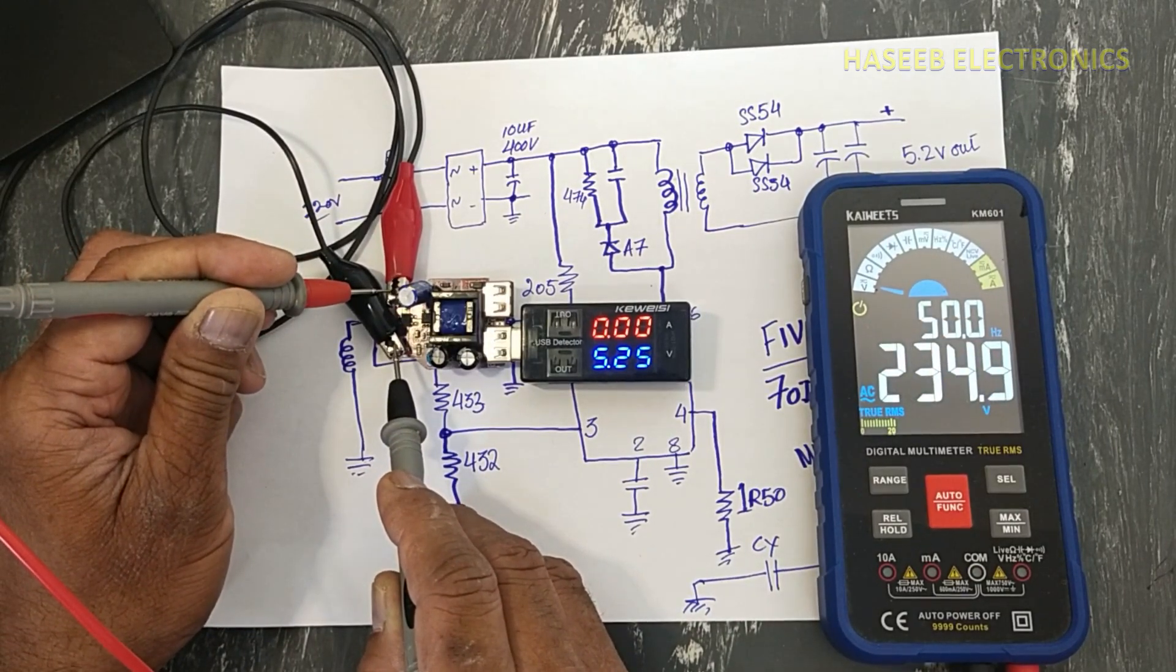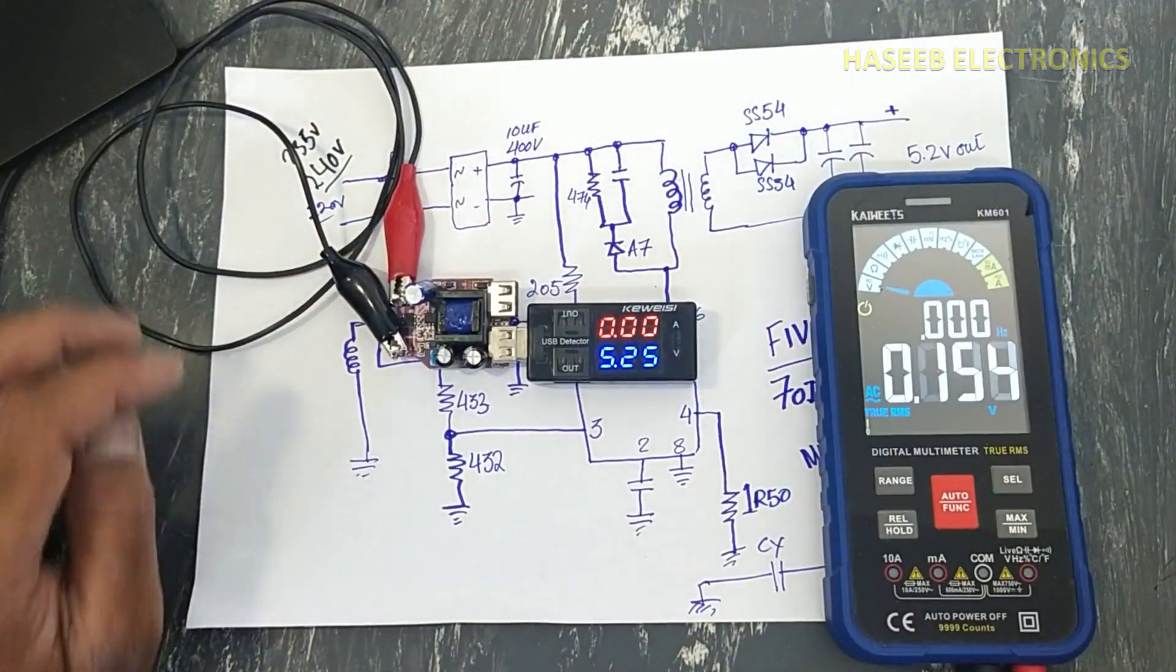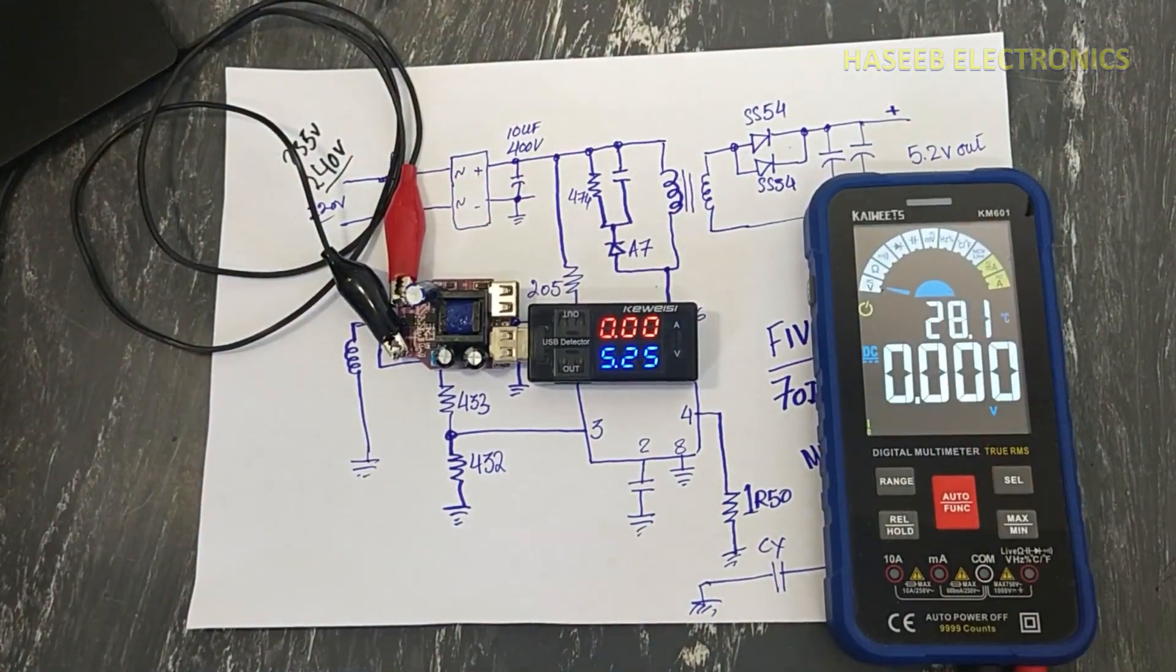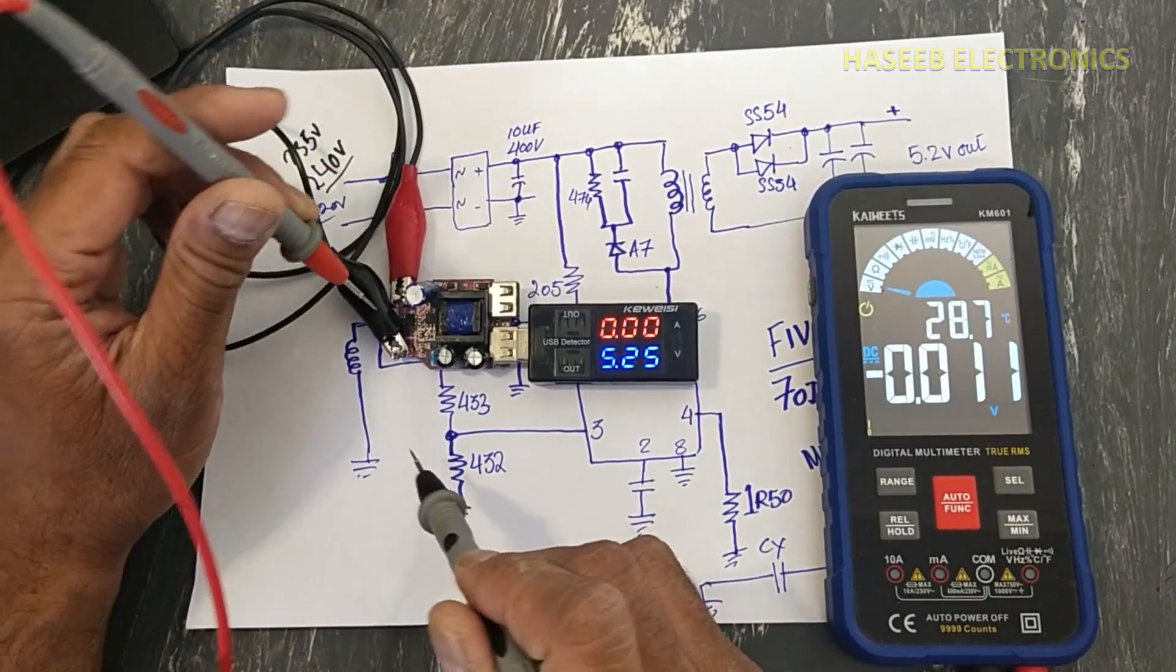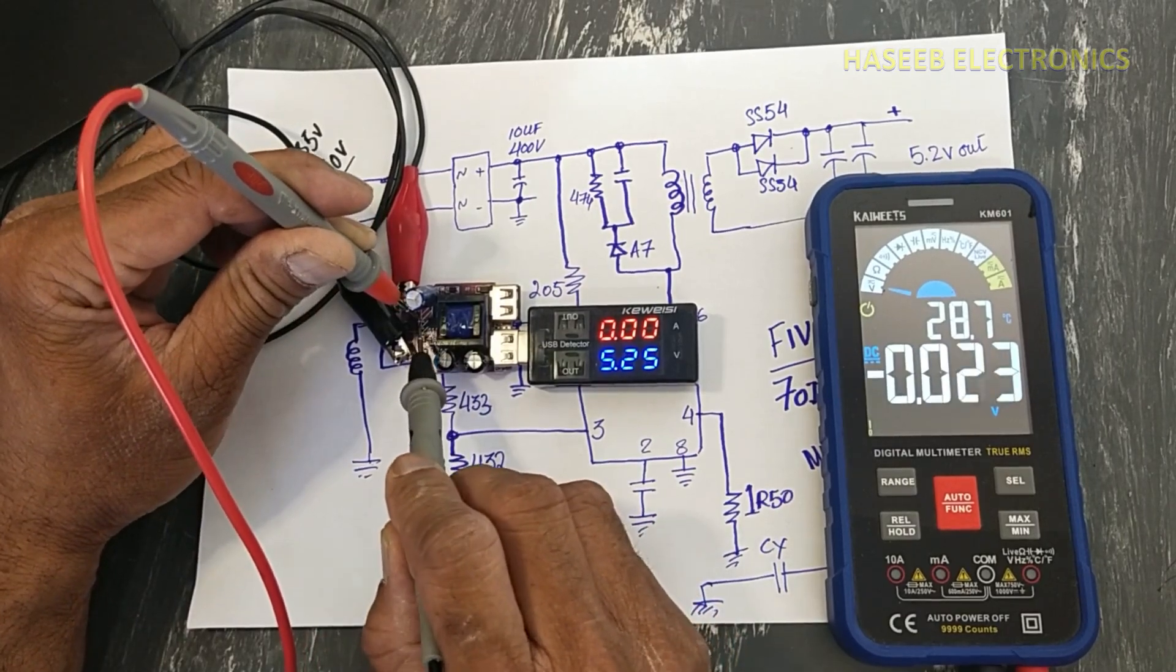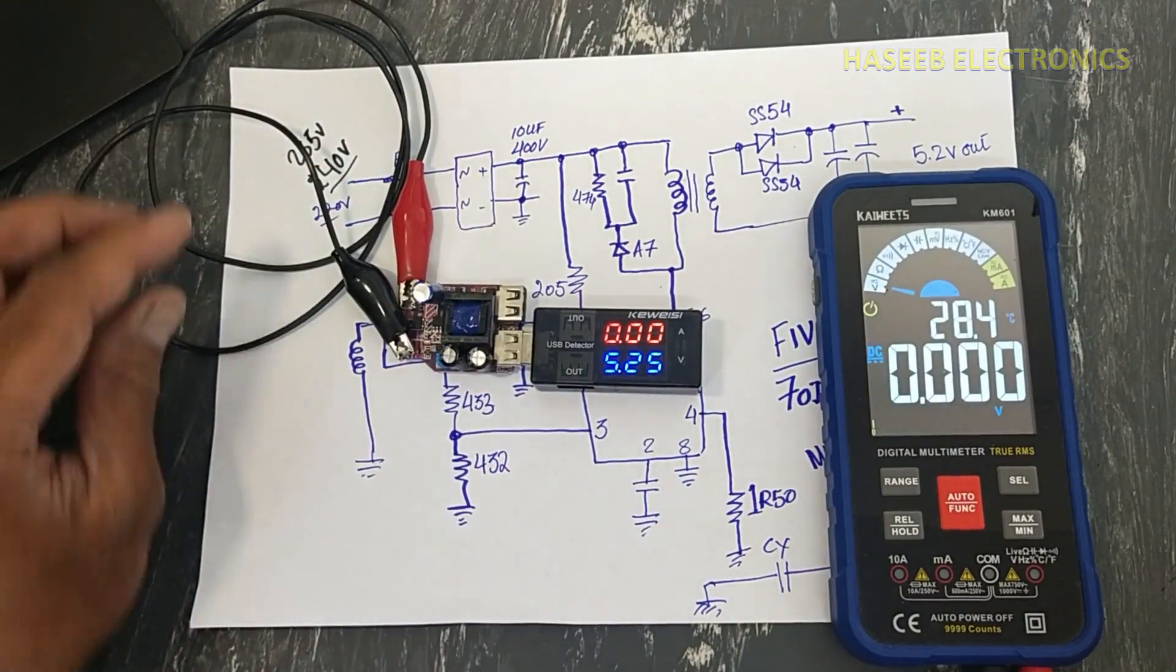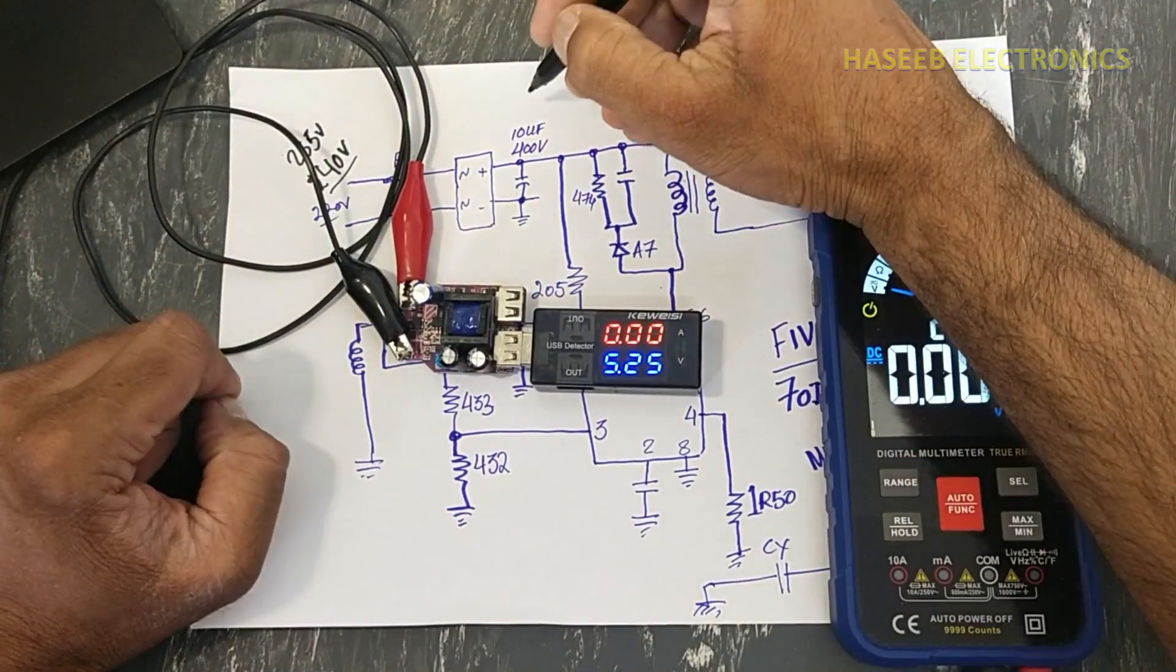234.9 at inputs, 235 volts. Then we have DC voltage. We can test in the output of the bridge rectifier, it is 334 volts at this capacitor.